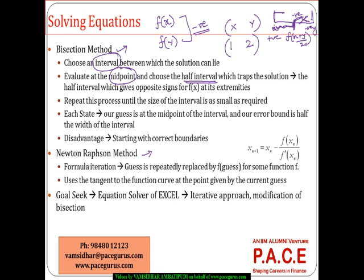We keep repeating this process again and again until the size of the interval comes down to a very, very narrow range, at which point we stop the iterations. Our guess is always at the midpoint of the interval, and the error is half the width of the interval — at every stage, half the width of the interval is directly eliminated. We are trying to narrow down the solution and after a certain number of iterations we freeze on our solution. The major disadvantage, however, is...